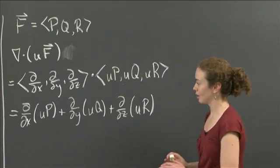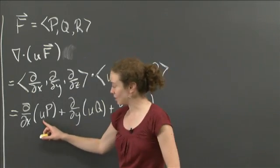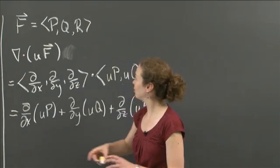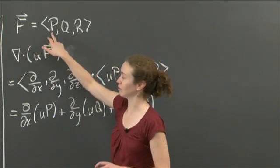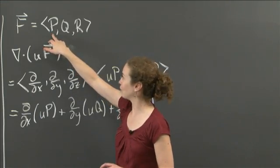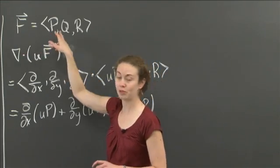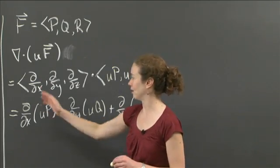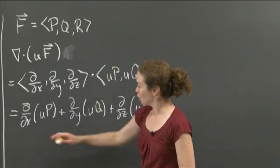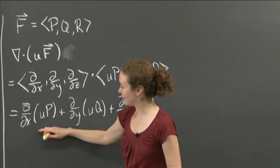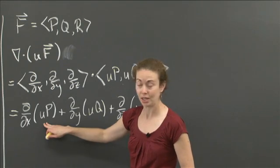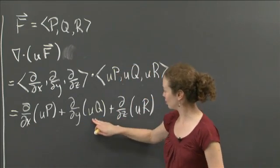Now how do I deal with this? Well, notice that u is a function and P is a function. Why is that? Because P was a component of a vector field. So it is just a function that is in the first component of the vector field. P, Q, and R are all individually functions that depend on x, y, and z. So here, at this step, I can actually take the regular product rule we have for functions. And I can do it in this one, this one, and this one.